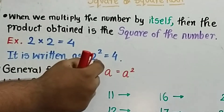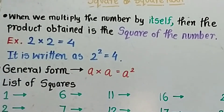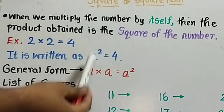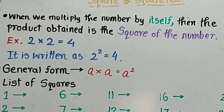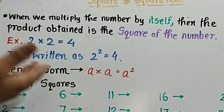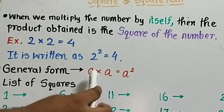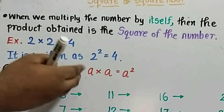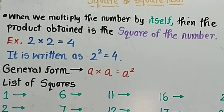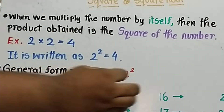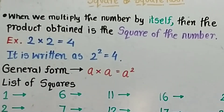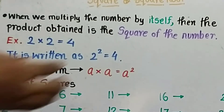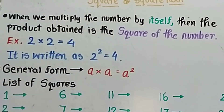We also write it as 2 raised to the power 2. The power 2 is known as square. So 2 raised to the power 2 is 4. The general form is: a into a is known as a square. You can use any other variable in place of a, but generally we write a. We pronounce it as a square, and here we pronounce it as 2 square.